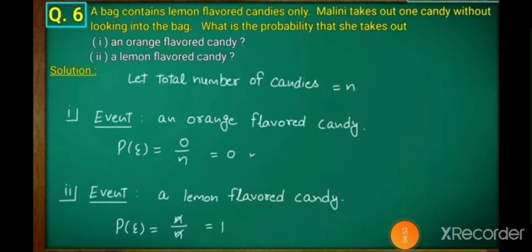Next question, question number 6: a bag contains lemon flavored candies only. Ek bag hai jismein only lemon flavored candy hai — no other flavor. Malini takes out one candy without looking into the bag. What is the probability that she takes out: first, an orange flavored candy, and second, a lemon flavored candy? Agar bag mein sirf lemon candy hai, toh jitni bhi candy nikalenge, woh lemon hi hogi — koi aur flavor nahi aa sakta.